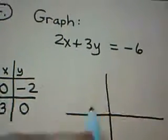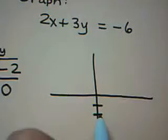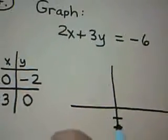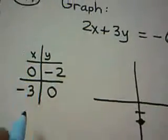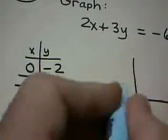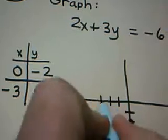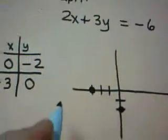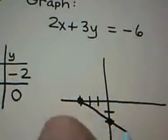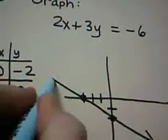If I plotted the ordered pair 0, negative 2. 0, negative 2. And if I plotted the ordered pair negative 3, 0, and played the connect the dots game, I have a graph of my line.